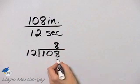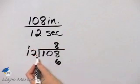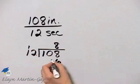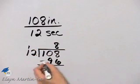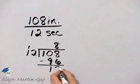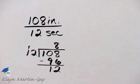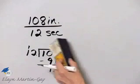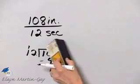8 times 2 is 16, carry the 1. 8 times 1 is 8, and that's 96. Notice our remainder is 12. What does that mean? That means we can go one more time, and it will go one more time evenly.